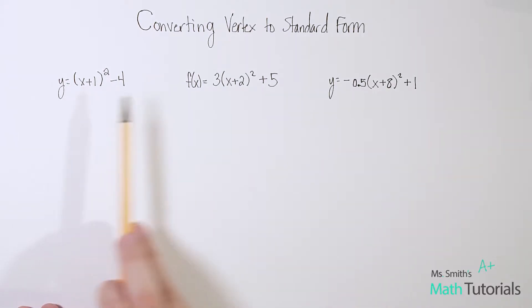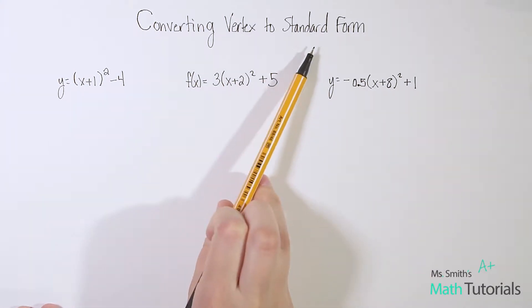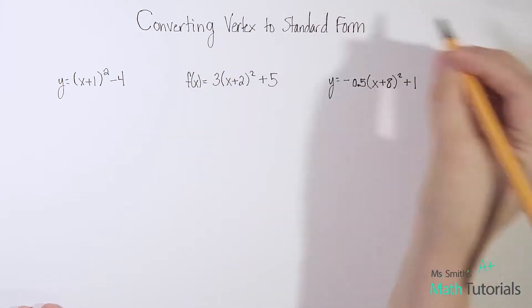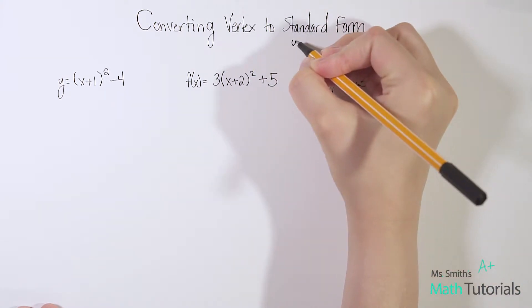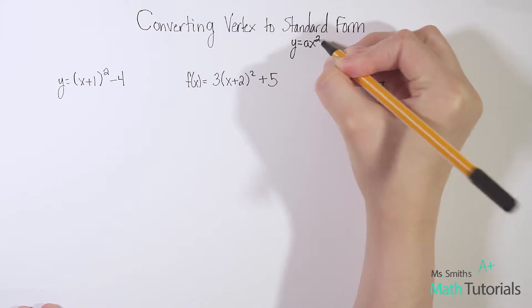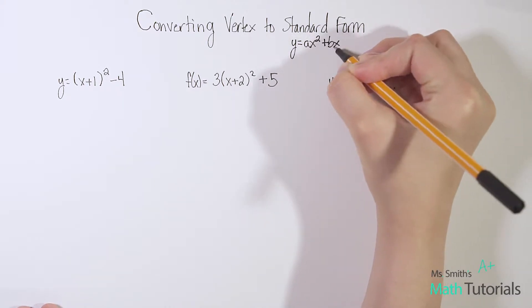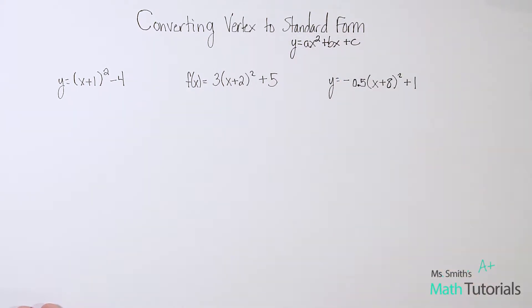I've given you three examples. These are all in vertex form. They are all quadratics, they're to the power of two. I'm going to show you how to rearrange this into our standard form. Just as a reminder, standard form is y = ax² + bx + c.